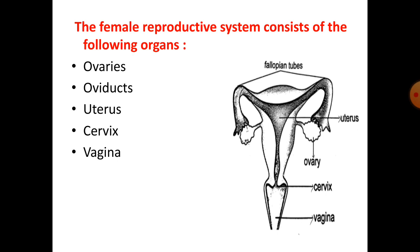Next is the cervix, which is the lower part of the uterus. It helps in the transport of the sperm. The vagina is a muscular tube arising from the lower end of the uterus to the outside. It receives the sperms and also serves as a birth passage for delivery of the child.